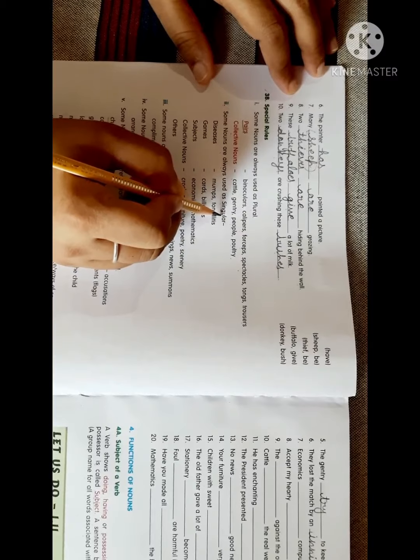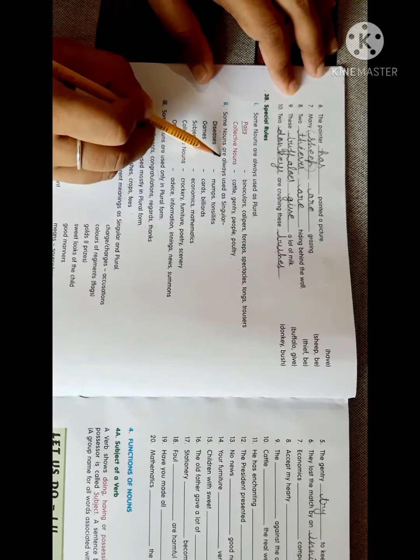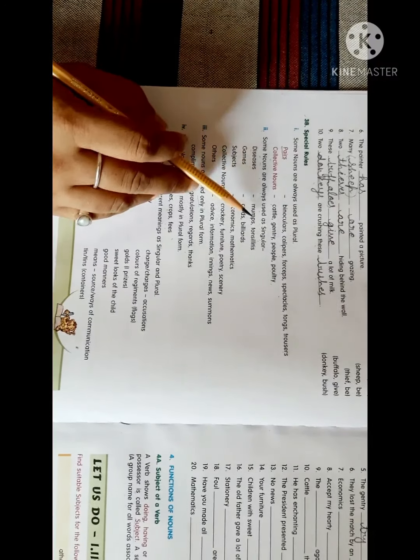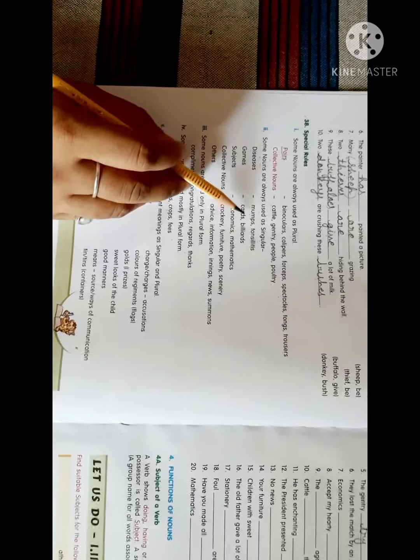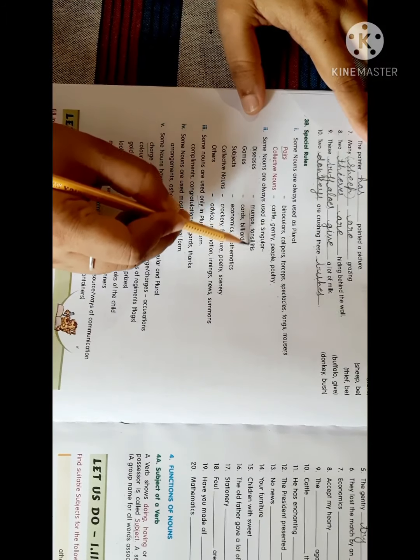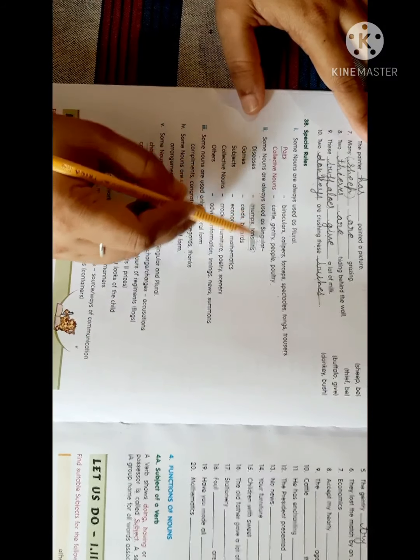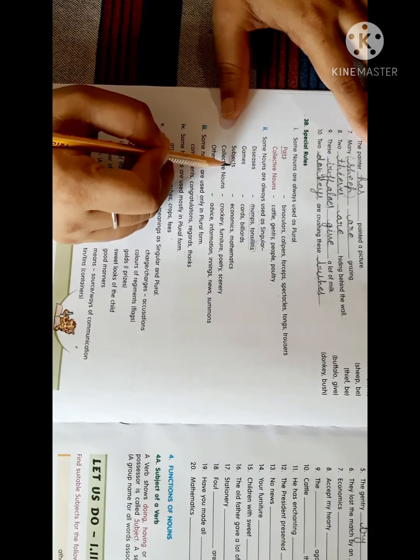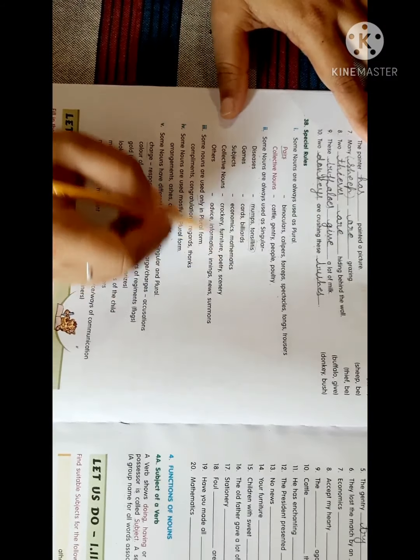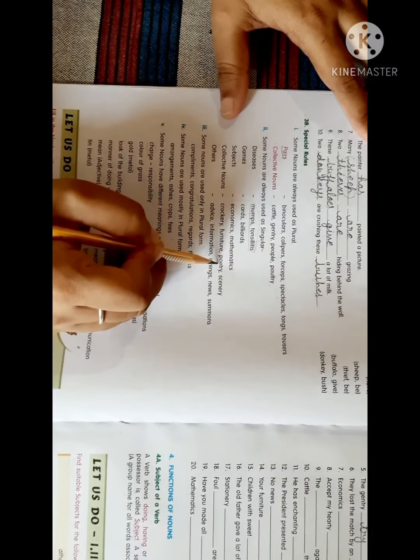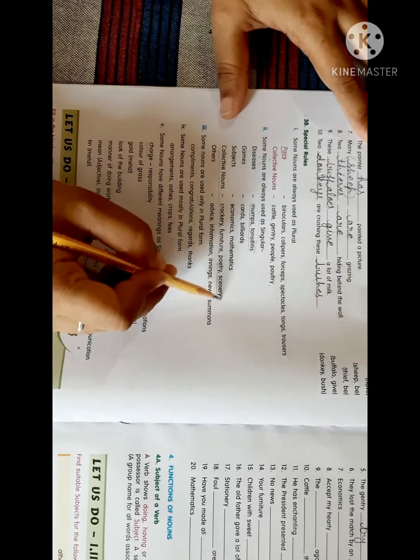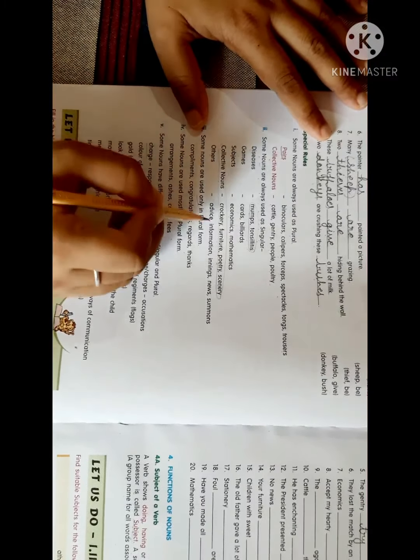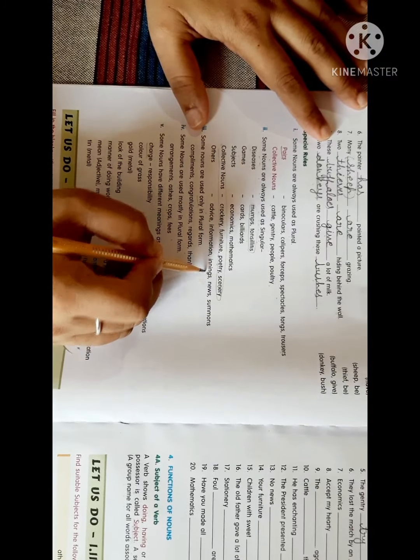Second special rule: some nouns are always used as singular. Diseases: mumps, tonsillitis. Pay attention - these nouns look like plurals but they are always used as singular. Games: cards, billiards. Subjects: economics, mathematics. Collective nouns: crockery, furniture, poetry, scenery. Others: advice, information, innings, news, summons.